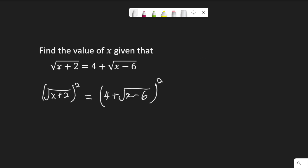Note that when we square a number under a square root sign, the square root will be gone. For example, if I have root a times root a, that is equal to root a squared, and the square root of a squared is a. So the point is: when a number is under a square root sign and you want to get rid of that square root sign, you square it. So when I take the square of root x plus 2, I'll be left with x plus 2 — the square root is gone.